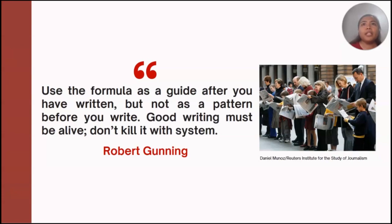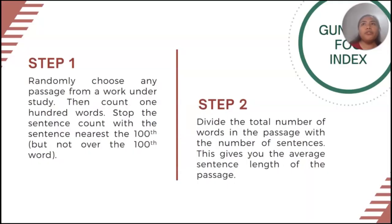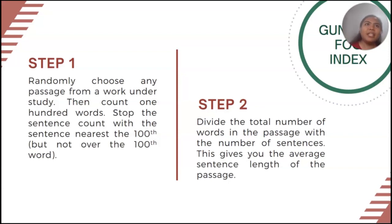For this particular topic, we are going to find the Robert Gunning Fog Index of a certain passage, and it has three steps to do so. The first two steps are as follows: First, randomly choose any passage from a work under study, then count 100 words. Stop the sentence count with the sentence nearest to 100 but not over it.